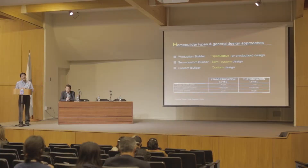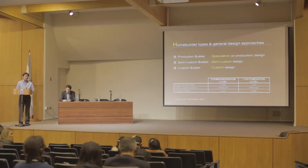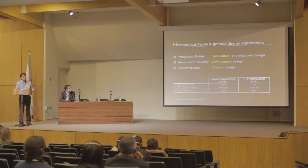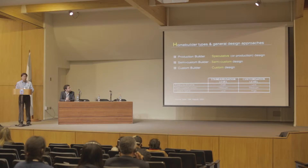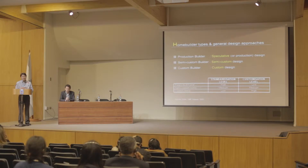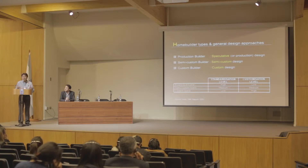This slide shows today's home building business operations. Home builders are often classified into three types: production builders, semi-custom builders, and custom builders. Production builders utilize their model housing prototype, which is designed based on speculation. Therefore, there is no user involvement in the design decision-making process, unlike custom builders, who provide one-of-a-kind unique products accommodating diverse needs and demands of their users.